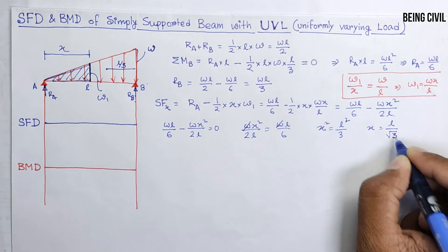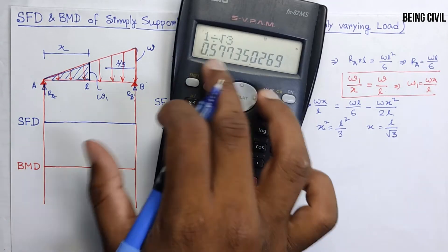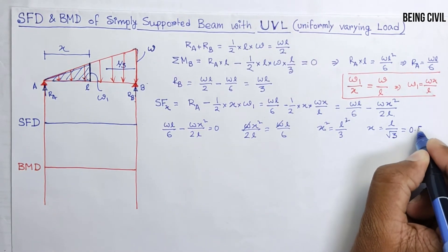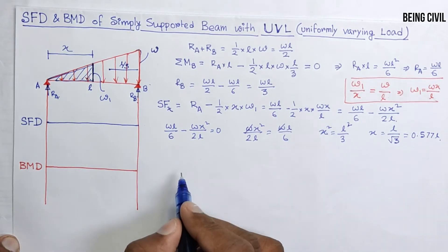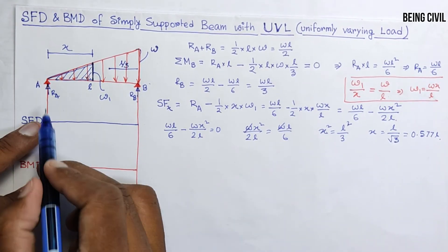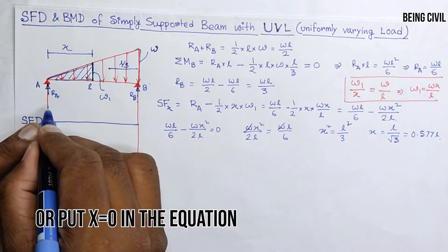Now let us draw the shear force diagram. At X equals 0, it will be equal to RA, which is WL by 6. This is the midpoint, and 0.577L will be somewhere right here.